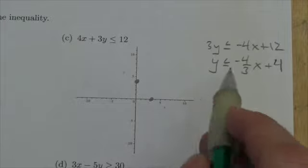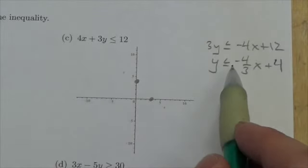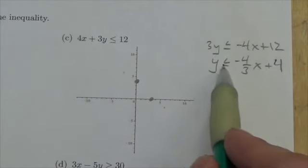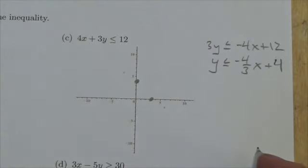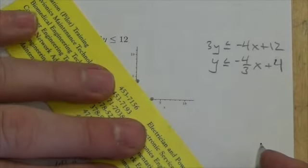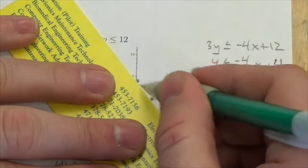Now this equation here is going to be less than or equal to. The y is less than or equal to that. Or equal to means I'm going to include the line, which means I've got to use a dark line here. Now I'm just going to use a ruler to do this.